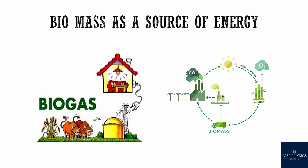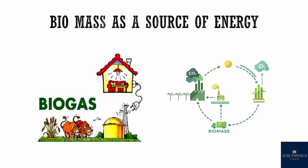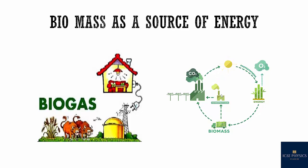Biomass as a source of energy — the waste and dead parts of living beings like plants, trees, and animals is called biomass. They contain carbon compounds. The chemical energy stored in biomass is called bioenergy. Biomass is used to make biogas, which is used as a fuel to run engines and generate electricity. A Gobar gas plant is an example of it.